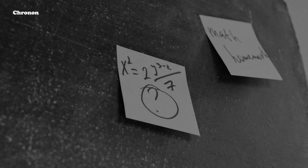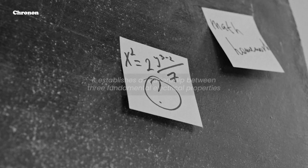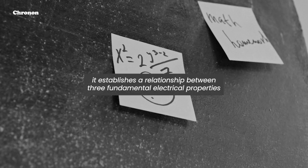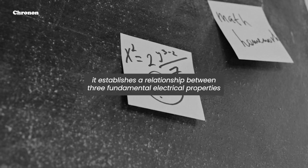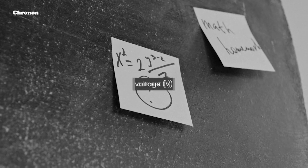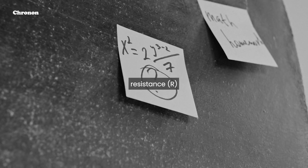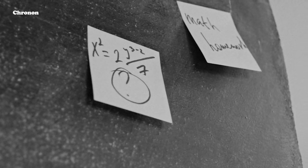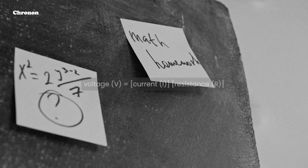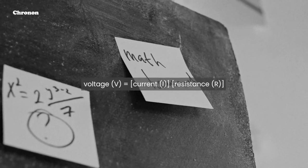Ohm's Law is elegantly simple. It establishes a relationship between three fundamental electrical properties: voltage, current, and resistance. The law is expressed as V equals IR.